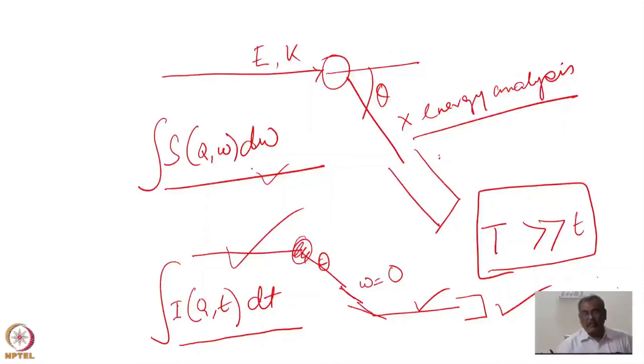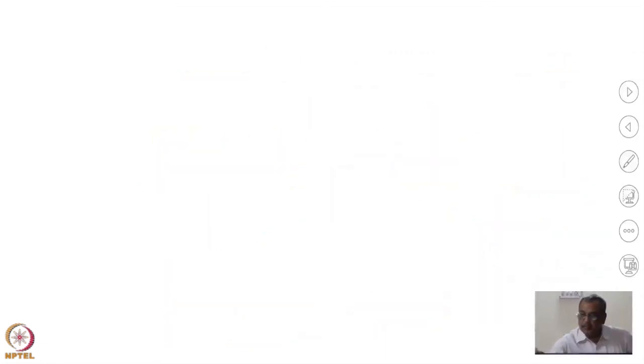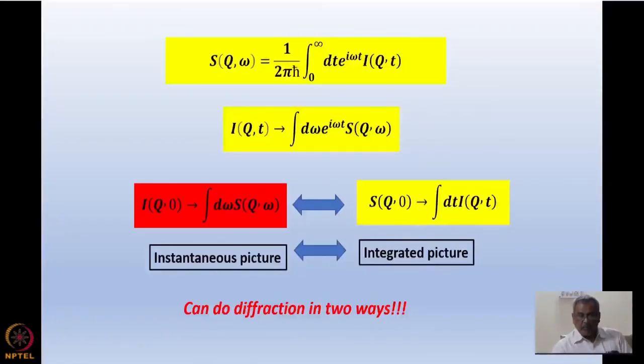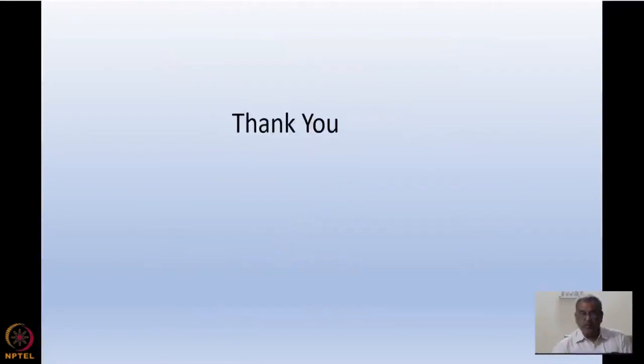Usually we do this, which is an integration over S(Q,ω)dω, and this is the diffraction pattern. But this concept can be used in neutron scattering and we do experiments in various ways. One is an instantaneous picture and one is an integrated picture, but both of them should converge to the same structure because ensemble average and time average for such a large statistical system should be same. So I stop the module here.